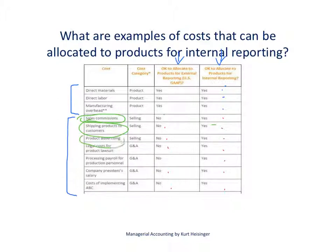If we're advertising specific products, for GAAP purposes we have to expense those costs when incurred, but for internal reporting purposes it might make more sense to attach those costs to our products. The point is that for managerial accounting and internal reporting purposes, we have lots of flexibility in deciding which costs to allocate to products and which costs not to allocate.